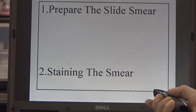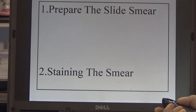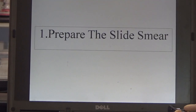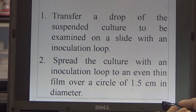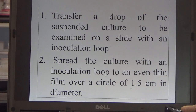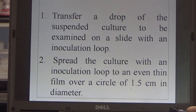Procedure. Step 1: Prepare the solid smear. Step 2: Staining the glass smear. Let's first prepare the solid smear. Transfer a drop of the suspended culture to be examined on a slide using an inoculation loop. Spread the culture with the loop into an even thin film over a circle of 1.5 cm in diameter.